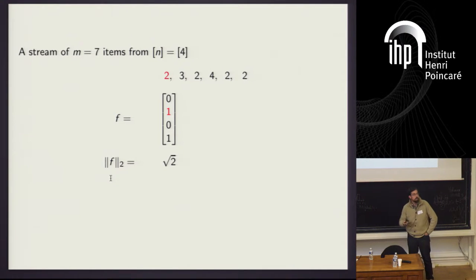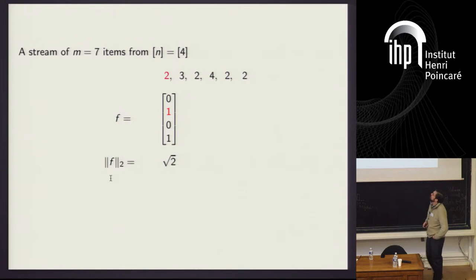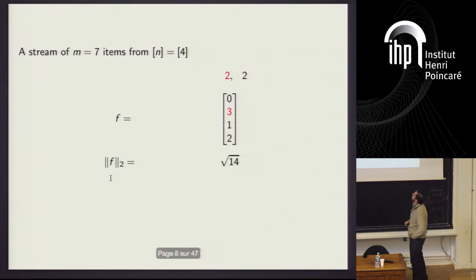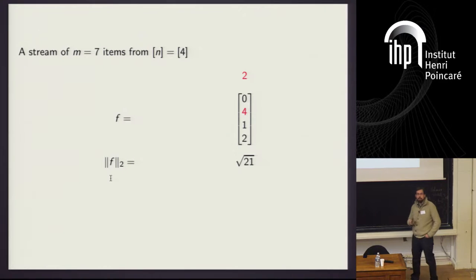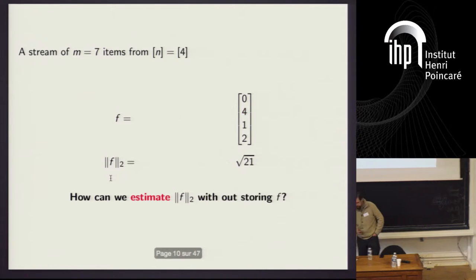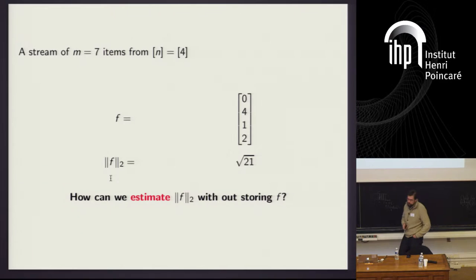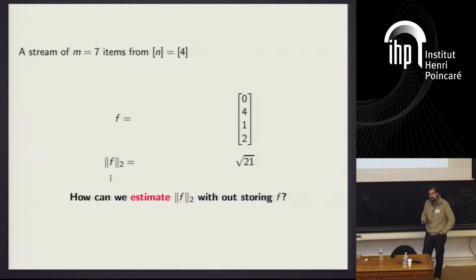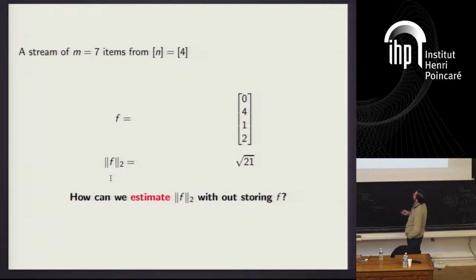The streaming algorithm might be interested in computing the Euclidean length of this vector — the 2-norm — so that as the stream is read, the vector changes. The goal is that at the end of the stream, the algorithm can output the square root of 21 in this case, or something that's an approximation to it. The question is how much space do we need to output this approximation? This would be trivial if we just stored the entire vector, but the whole point of the streaming model is that we have too much data. So how can we estimate this norm without storing the vector?